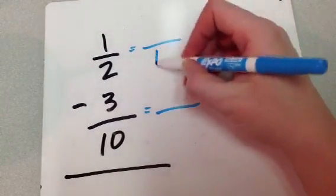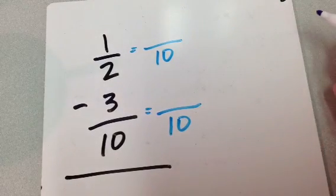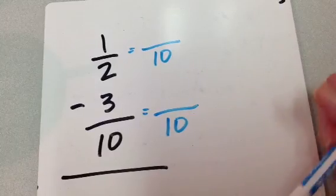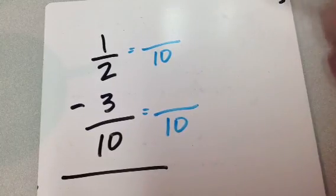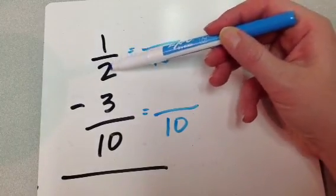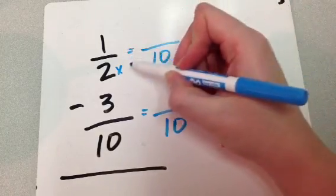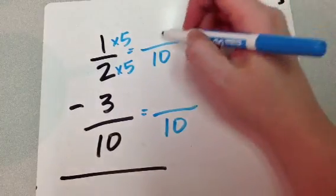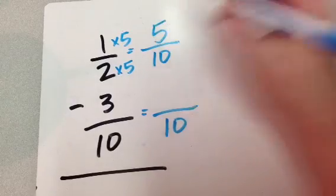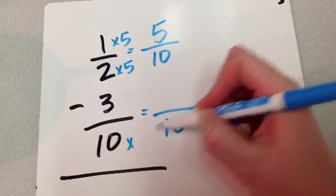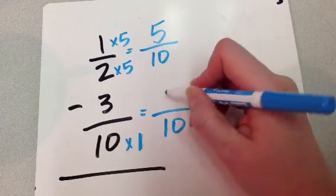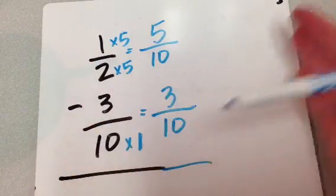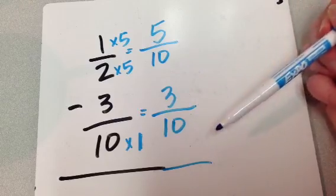Hopefully, when I showed you this problem, you kind of saw that. Hopefully, we're getting to that point in the quarter where you're starting to see what the common denominator is without having to list out all of the multiples. So, this one up here, it was 2 times something gives me 10. Well, it was 5. So, I multiply the top number by 5, which 5 times 1 is 5. And down here, 10 times something gives me 10. Well, it's just 1. So, that means that this bottom guy, he doesn't really change. 3 tenths, 3 tenths.